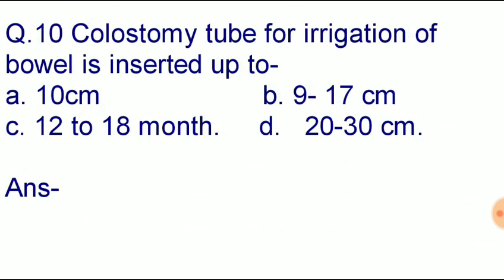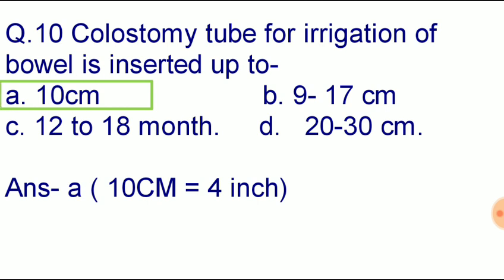Question number ten: colostomy tube for irrigation of bowel is inserted up to — option A: 10 cm, option B: 9 to 17 cm, option C: 12 to 18 cm, option D: 20 to 30 cm. Correct answer: option A, 10 centimeters or 4 inches.